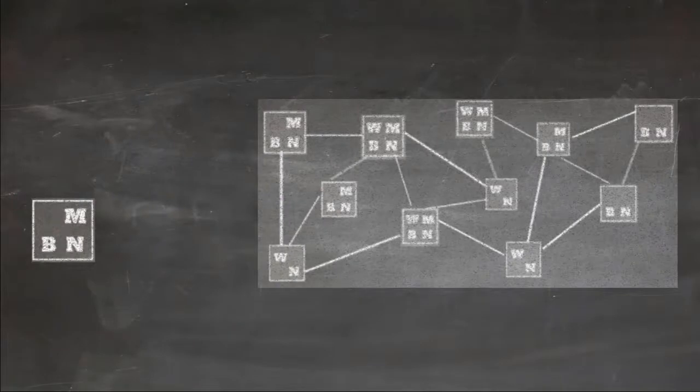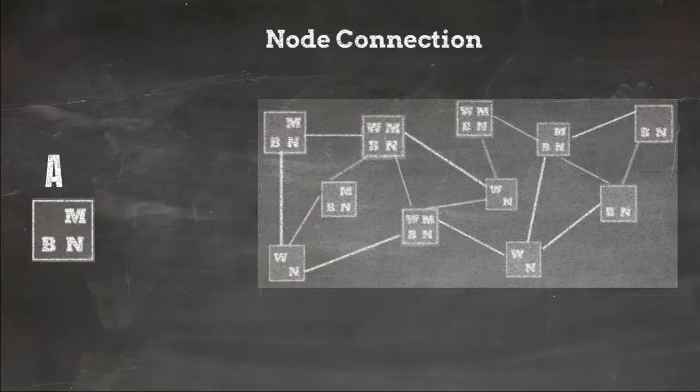Once bootstrap node has discovered one Bitcoin network node, next step is node connection. Let's say node A is bootstrapping node and node B is the remote node in the network which was discovered by node A.